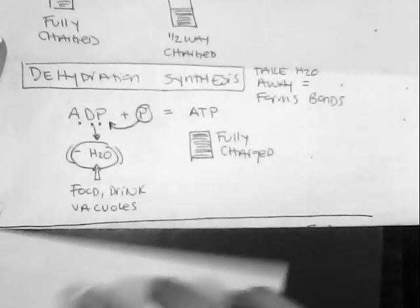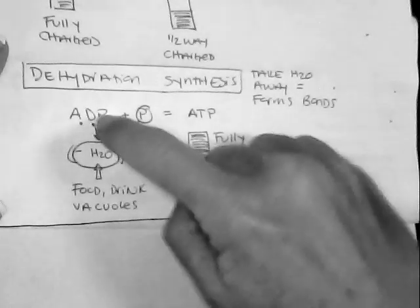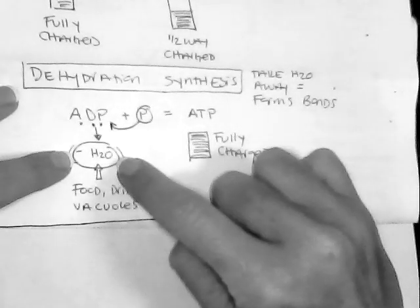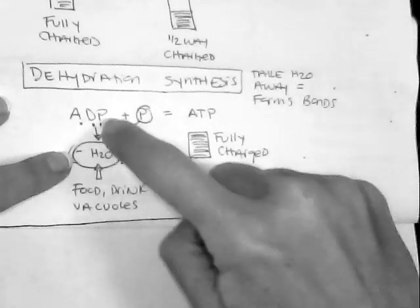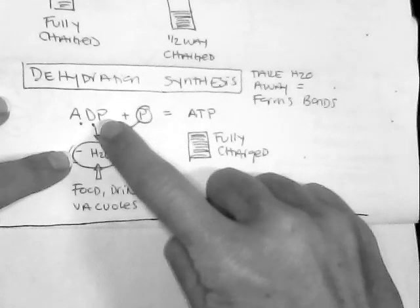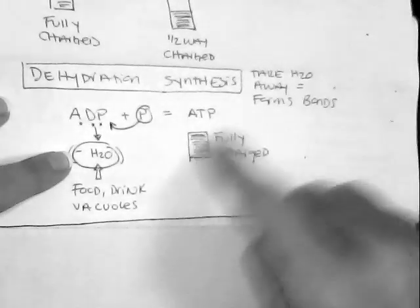Now because ATP is known as a recyclable battery, we need to put them back together. So dehydration synthesis is where we're going to dehydrate the molecule. So I'm going to dehydrate, which means I'm going to rip water away from ADP. And that in turn allows the phosphate to actually connect back together. And we're back at our fully charged battery.